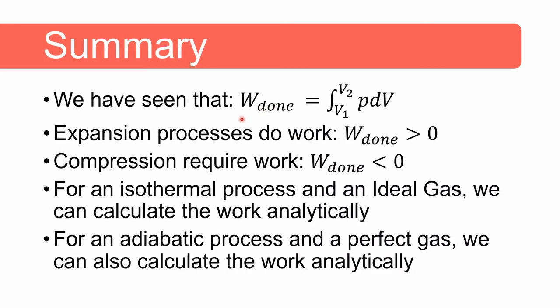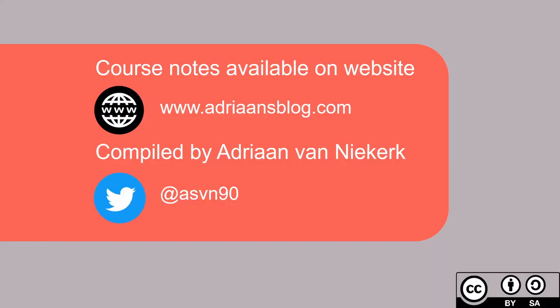So in summary we have seen that the definition of work is the integral of p dv. For an expansion process work is done and your value is greater than zero. For a compression process we require work and thus the value of work done is smaller than zero. For an isothermal process and an ideal gas we can calculate the work analytically, and we can also calculate the work analytically for an adiabatic process and a perfect gas. Hope you've enjoyed the video. The course notes which these videos are based on are available on my blog audrenonsblog.com. I'm also on twitter, my twitter handle is at asvn90 if you want to connect with me or ask any questions. Thank you very much for watching and I will see you in the next video. Bye.